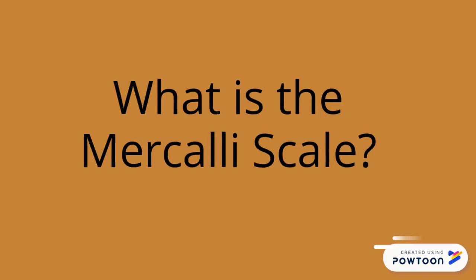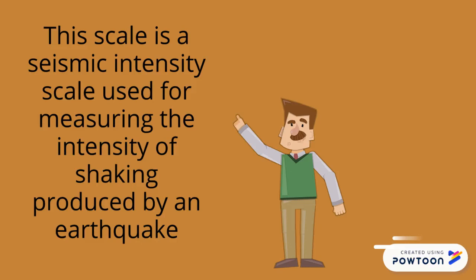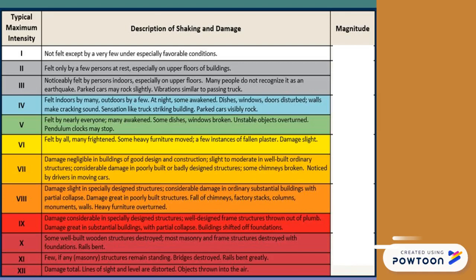The modified Mercalli intensity scale is descended from Giuseppe Mercalli's Mercalli intensity scale of 1902. This scale is a seismic intensity scale used to measure the intensity of shaking produced by an earthquake. It measures the effects of an earthquake at a given location and is distinguished from the earthquake's inherent force or strength as measured by the Richter scale magnitude usually reported for an earthquake.